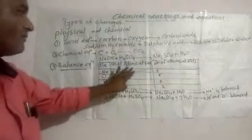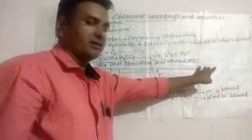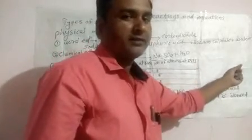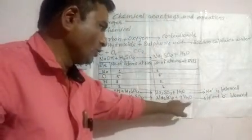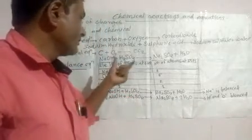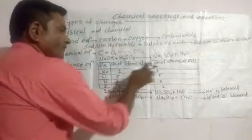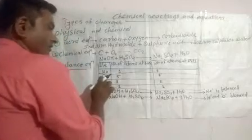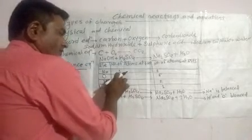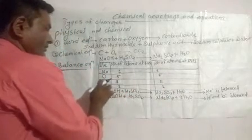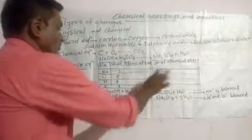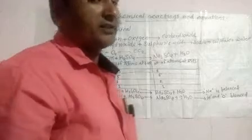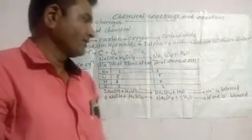Write the final chart again to verify: 2 sodium at LHS, 2 sodium at RHS; 6 oxygens at LHS, 6 oxygens at RHS; 4 hydrogens at LHS, 4 hydrogens at RHS; 1 sulfur on each side. The whole equation is balanced. The final balanced equation is: 2NaOH + H2SO4 → Na2SO4 + 2H2O.